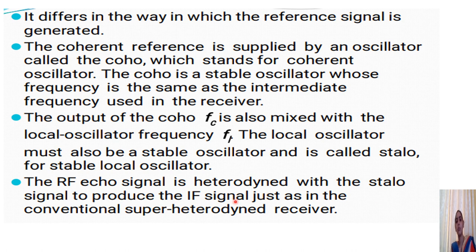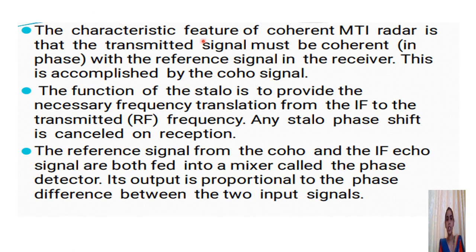The echo signal is heterodyned with the stable local oscillator to produce the IF signal, just as in a conventional super-heterodyne receiver. The reason for using the stable local oscillator and the coherent oscillator is that the transmitted signal must be coherent in phase with the reference signal in the receiver.